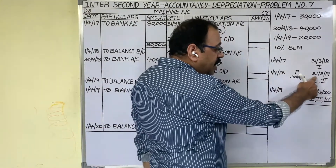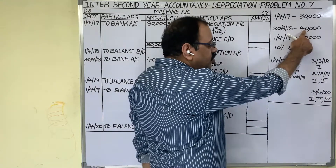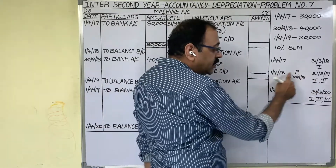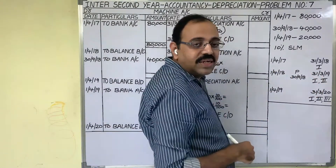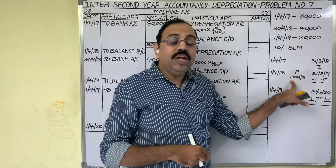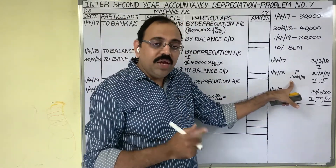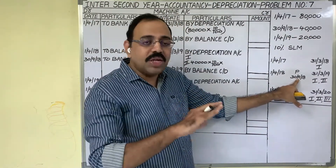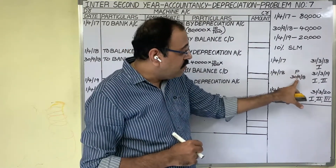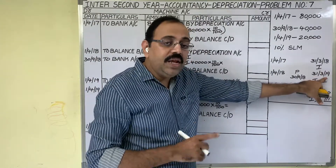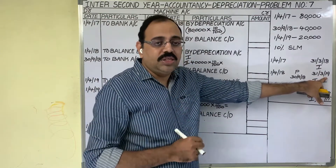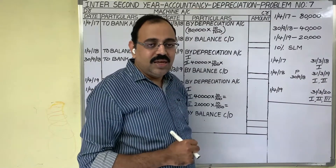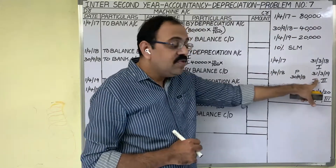Because in the 2nd year, they bought an additional asset for 40,000 rupees on 30th September 2018. Since 30th September is the last date of that month, they started using the 2nd asset from October 2018 — October, November, December, January, February, March. So this 2nd asset was used in the 2nd year for 6 months.